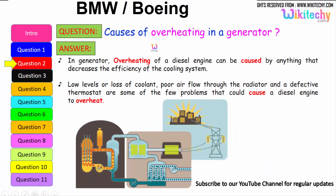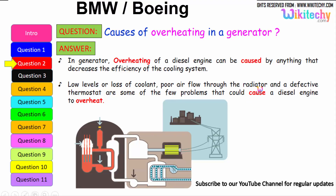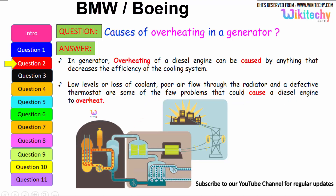The next question: causes of overheating in a generator. Overheating of a diesel engine can be caused by anything that decreases the efficiency of the cooling system. It can be due to the loss of coolant or low levels of coolant, poor airflow through the radiators, and a defective thermostat — these are some of the problems that could cause a diesel engine or generator to overheat.